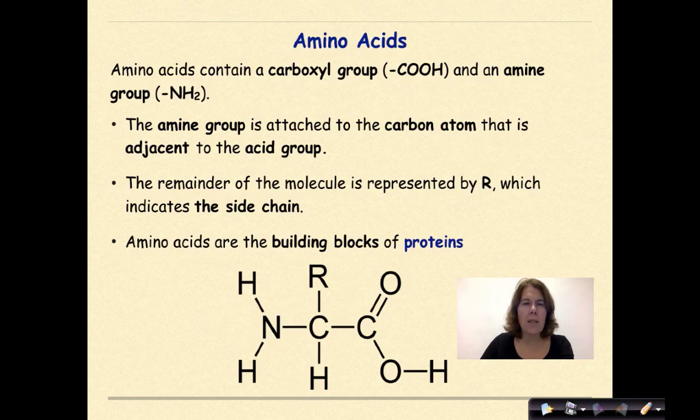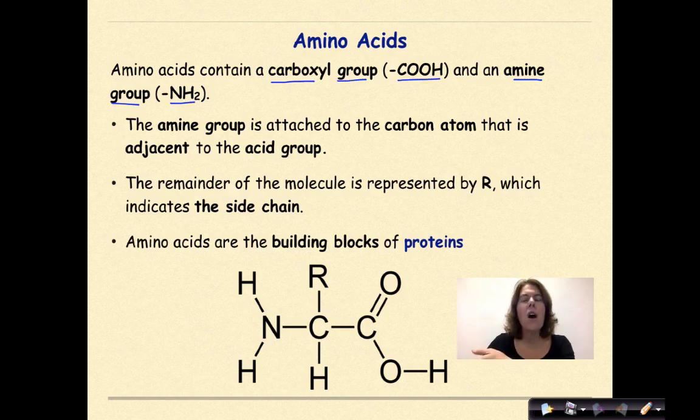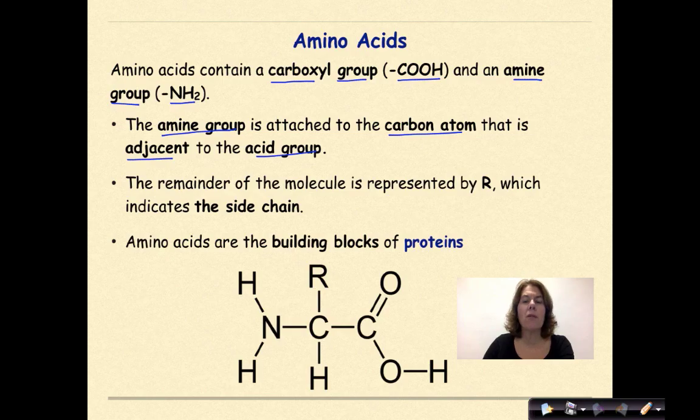Now let's talk about amino acids. Amino acids contain a carboxyl group, otherwise known as a COOH group, and an amine group, which we know is NH2. Really, we know it's ammonia NH3, but we're removing one of those hydrogens because we're going to be attaching some type of alkyl group. The amine group is attached to the carbon atom that is adjacent to the acid group. The remainder of the molecule is represented by R, which indicates the side chain. There's a number of different side chains which makes each amino acid different from another one. Remember that amino acids are the building blocks of proteins.